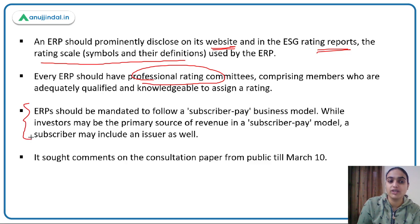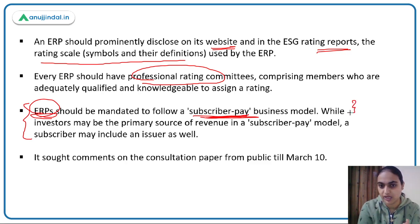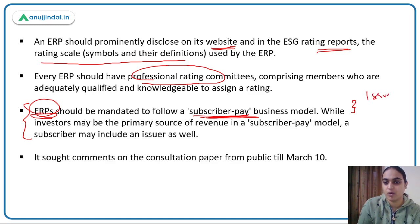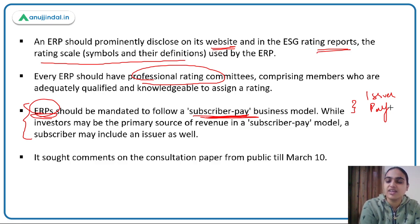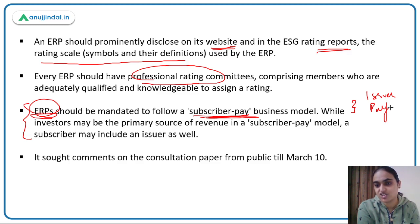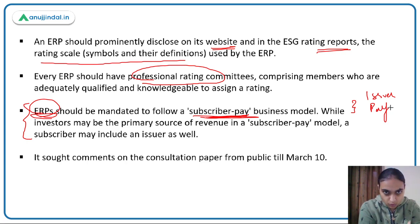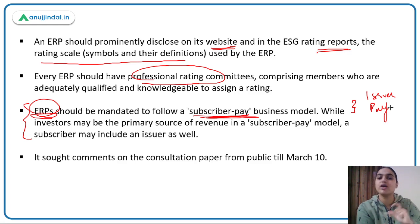SEBI has proposed that ERPs follow the subscriber pay business model. In the issuer pay model, a company pays the rating agency to assess and rate it, and that rating is shared with the public for free so investors can make decisions. The company (issuer) pays to get rated and to broadcast that rating to potential investors.